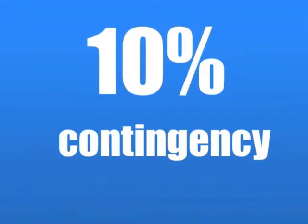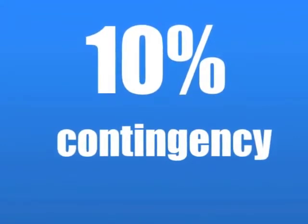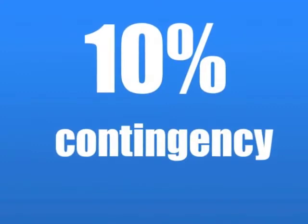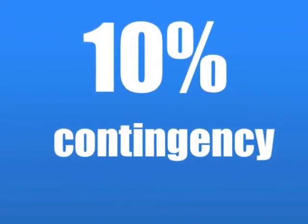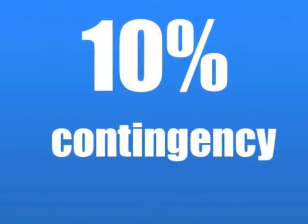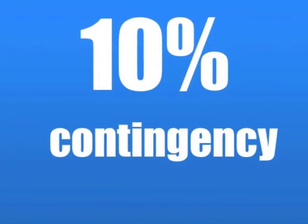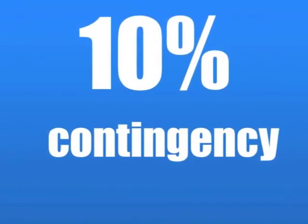Whatever method you choose to cost your project, it is important to remember that renovations have an uncanny knack of producing nasty little surprises. So keep those to a minimum by being rigorous with your pre-purchase due diligence, and for the unavoidable, make sure you include at least a 10% contingency as a buffer.